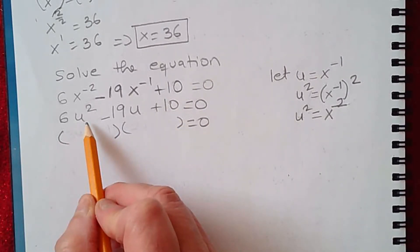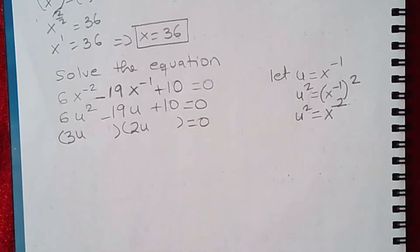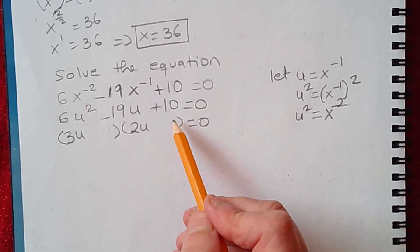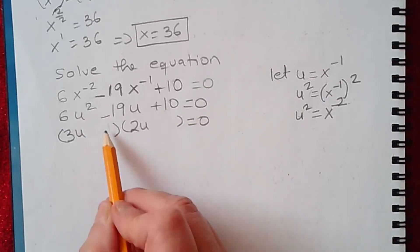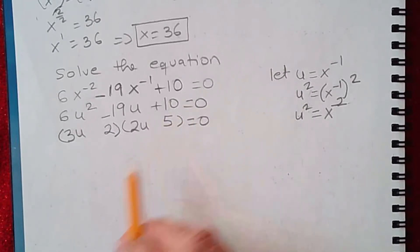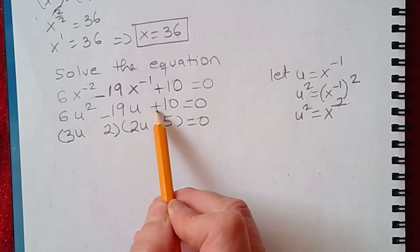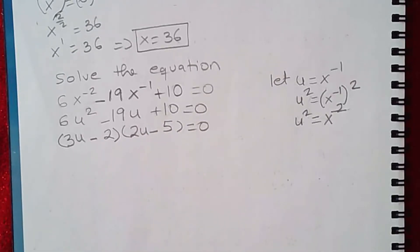6u squared can be 3u times 2u. Let's see if this will work. And then 10 you have 2 times 5. So it cannot be 2 here because 2 is not a factor. 2 must be here and 5 must be negative. The middle term is negative and the constant is positive, so they both must be negative. So we have here and here negative, negative.